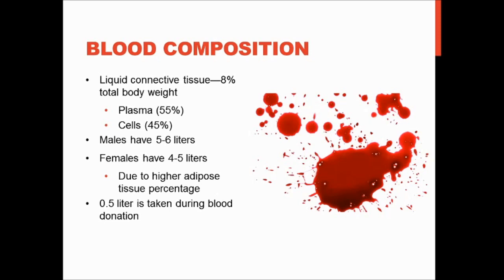Blood is separated into plasma and cells, or your formed elements. The plasma is the liquid portion and it comprises about 55% of blood. The formed elements are the cells, which are your red blood cells, your white blood cells, and your platelets, and that comprises about 45% of your blood. So there's more liquid part than there is cells.